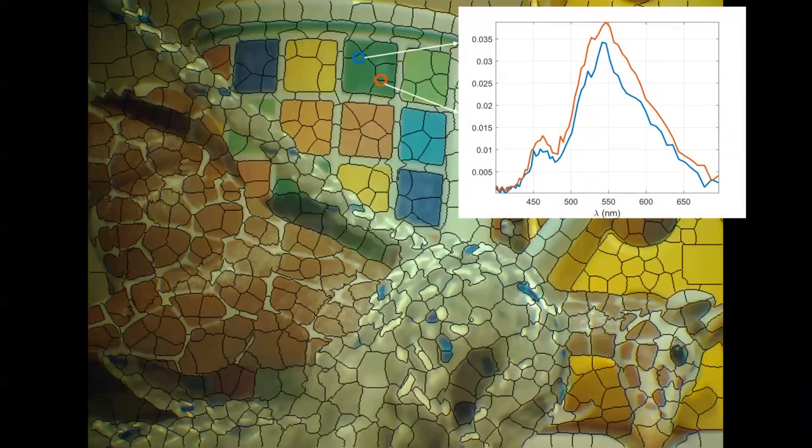Such spatially homogeneous regions are called superpixels that adhere to object and texture boundaries and provide a low dimensional representation in the local neighborhood. How do we exploit this idea that the spectrum is similar over a small area?